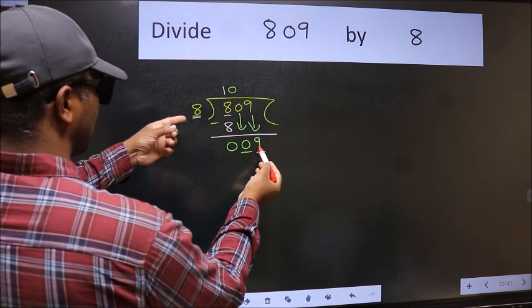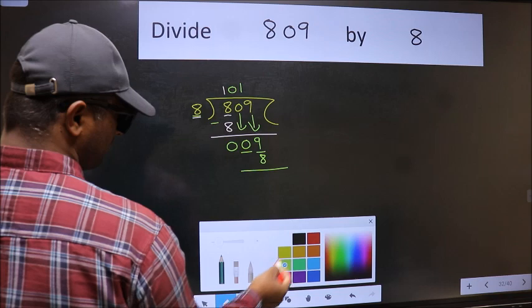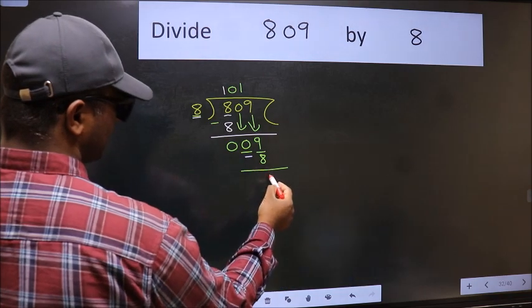A number close to 9 in 8 table is 8 once 8. Now we should subtract. We get 1.